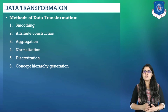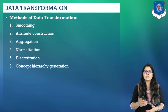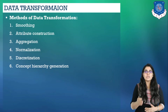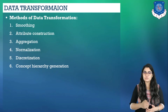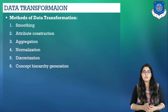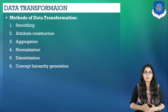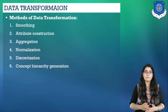Smoothing works to remove noise from the data. Smoothing techniques include binning, regression, and clustering. We have already discussed various smoothing techniques. Next is attribute construction, a method in which new attributes are constructed and added from the given set of attributes to help the mining process. Next is aggregation, where summary or aggregation operations are applied to the data — for example, daily sales data may be aggregated to compute monthly and annual total amounts. This step is typically used in constructing a data cube for data analysis at multiple abstraction levels.